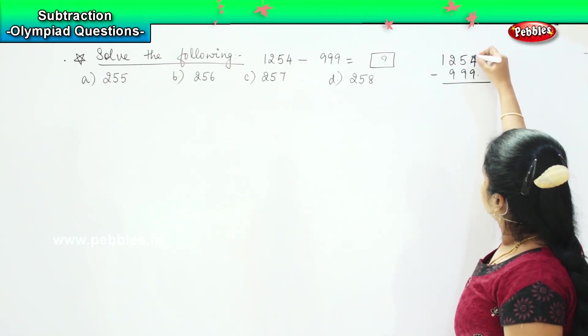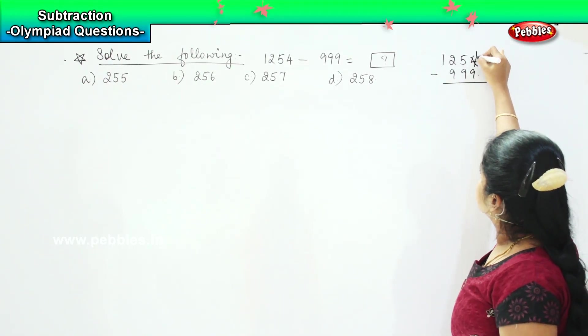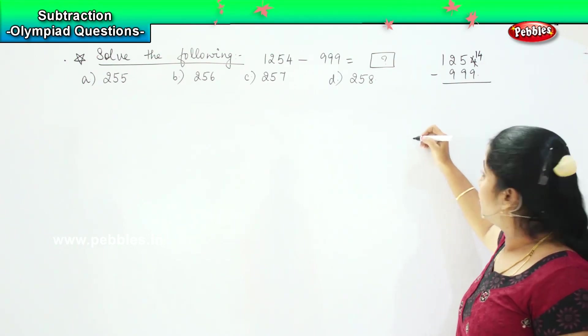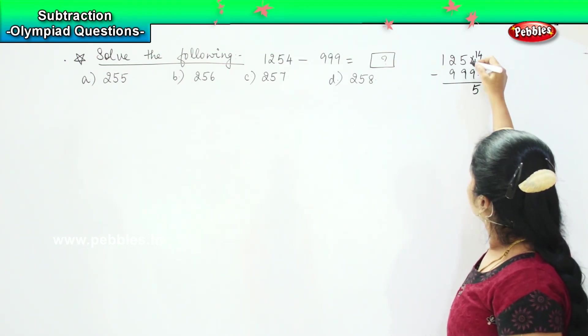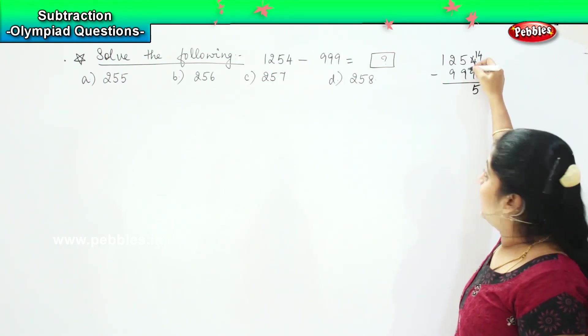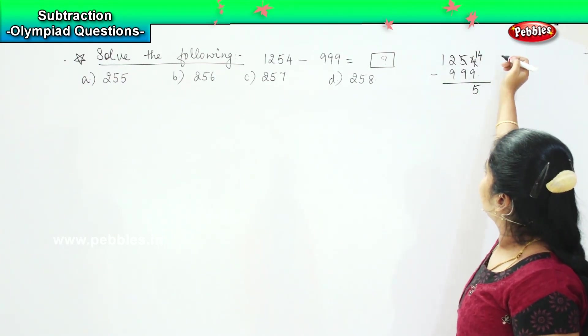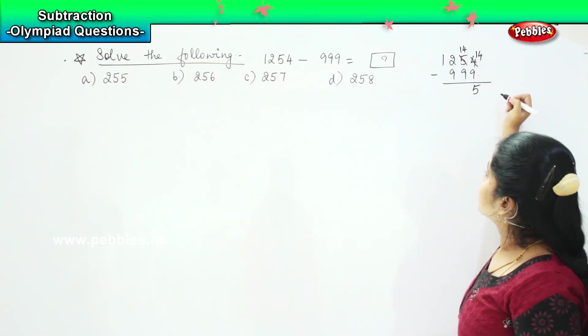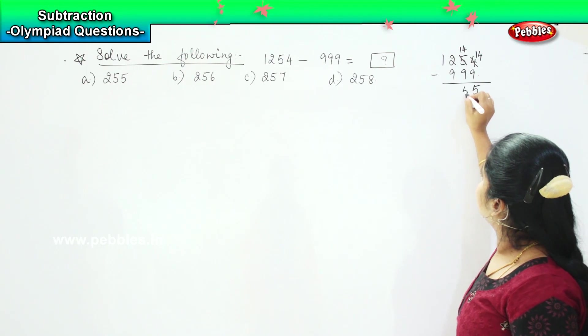So, now I am going to borrow from the tens place. This becomes 14, 14 minus 9 is 5. Now, again this is smaller than the 9. So, again I will be borrowing it from the hundreds place. So, this will become 14. 14 minus 9, it is again 5.